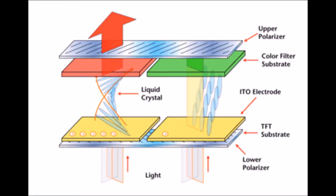If a crystal is bent, it will redirect light and allow it to pass through the color filter, which gives you the picture you see on an LCD screen.